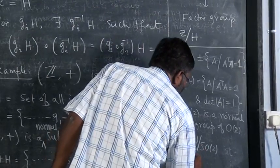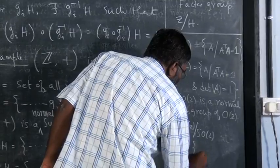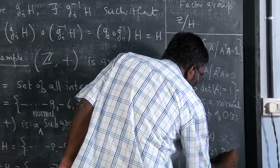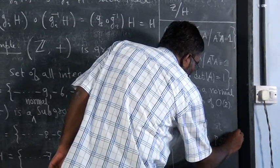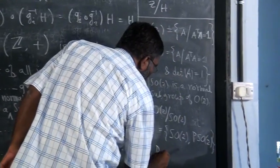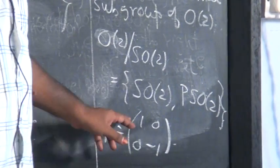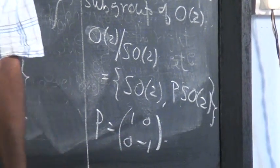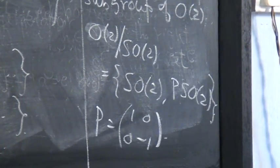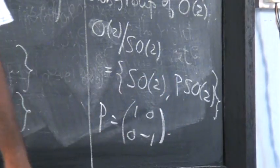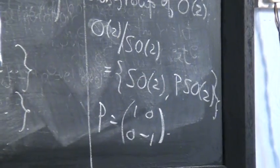You will get the remaining elements. This is actually SO2 and some matrix P operating on SO2, where you can define this P to be 1, 0, 0, minus 1 - the determinant of this one is minus 1. So the order of this factor group is just 2, that means it is like identity and another element.